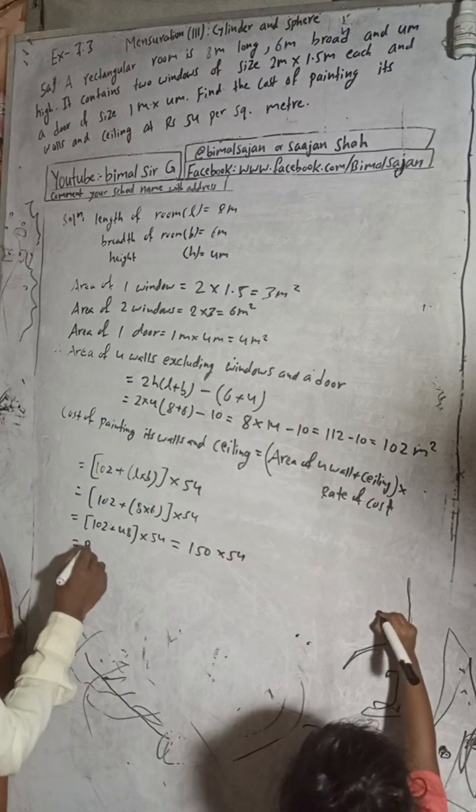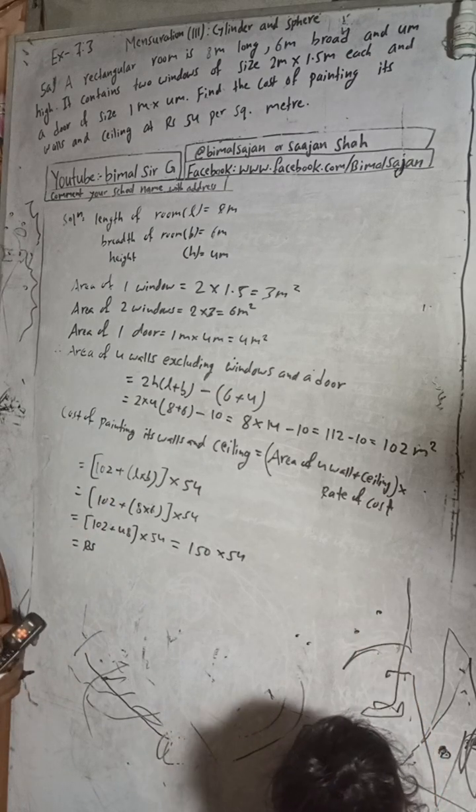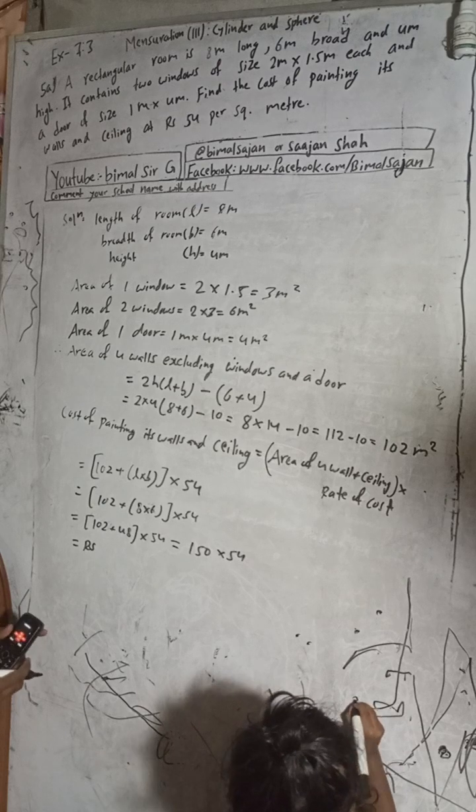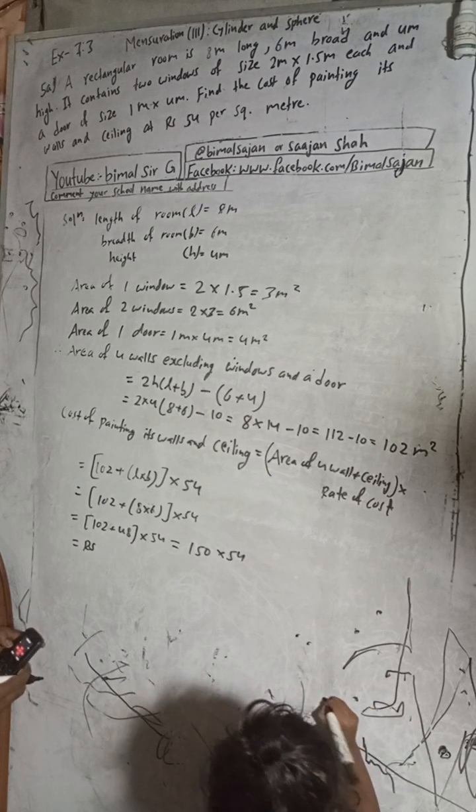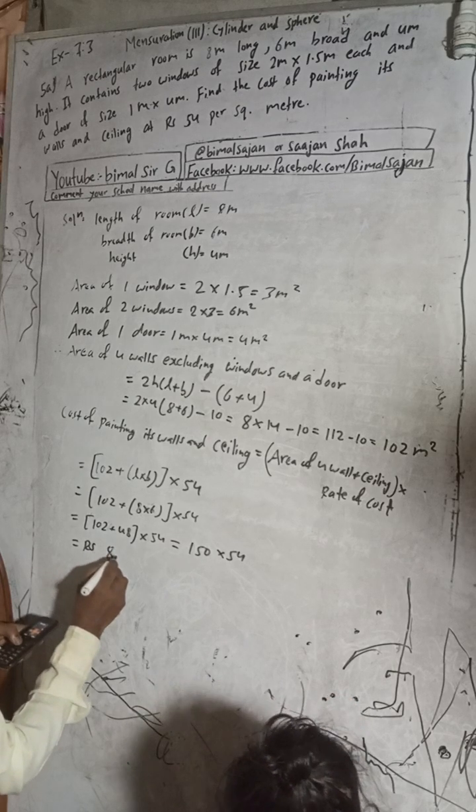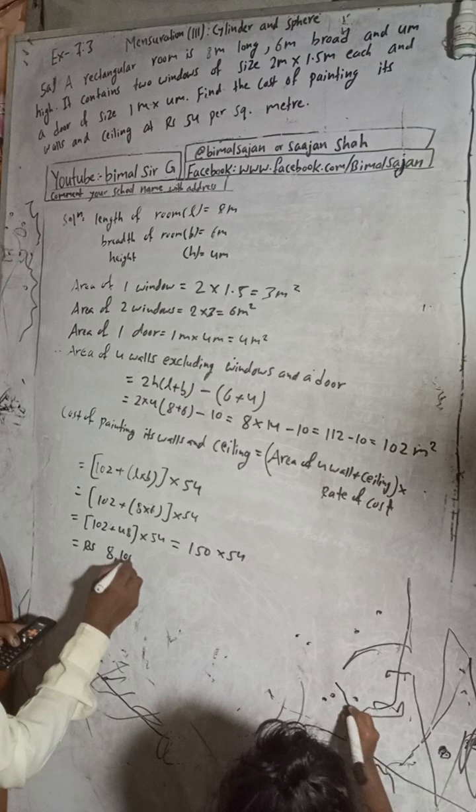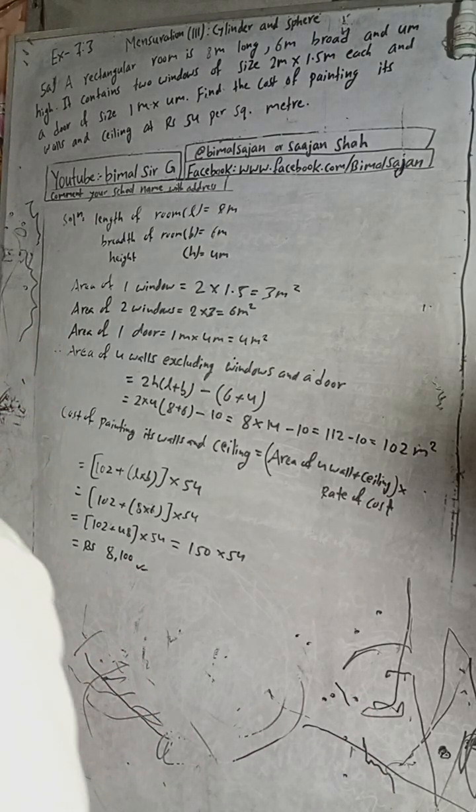So this is equal to 150 into 54, which is 8,100 rupees. So this is the cost. This is the solution of this question. If you students find this video useful, then share with your friends and like the videos.